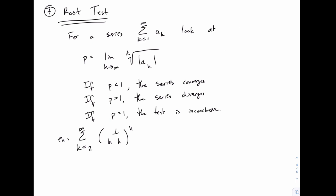and then we take the limit of that result as k goes to infinity. So we start kind of in the same way as the ratio test by defining this value of p, and then the conclusions for the root test are the same form as the conclusions for the ratio test.